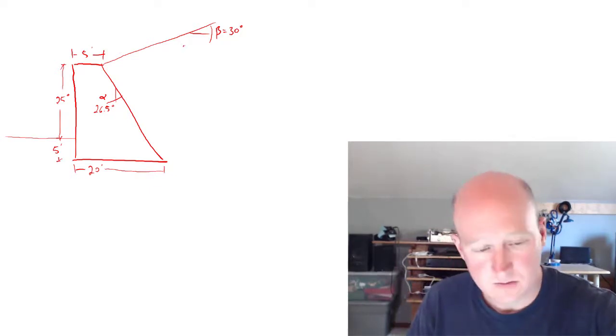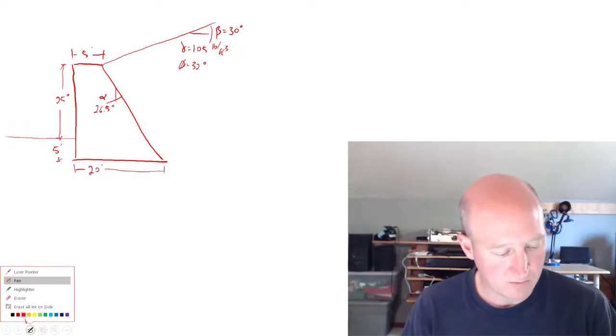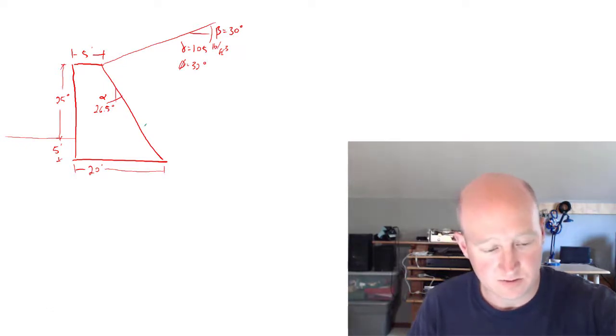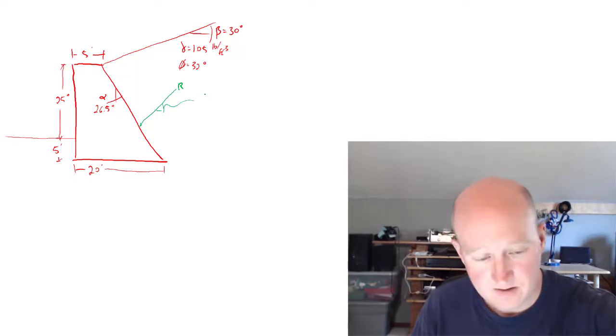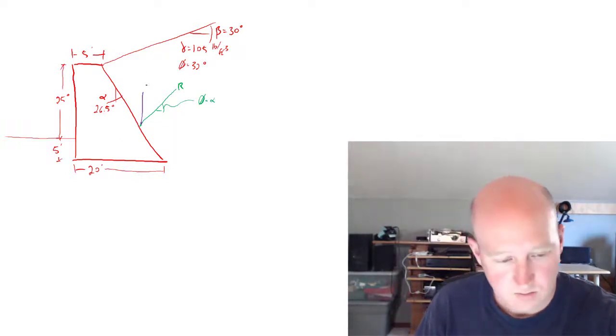The backfill material has a unit weight of 105 pounds per foot cubed and a friction angle of 32 degrees. So there's a resultant. The angle of that resultant is phi plus alpha.